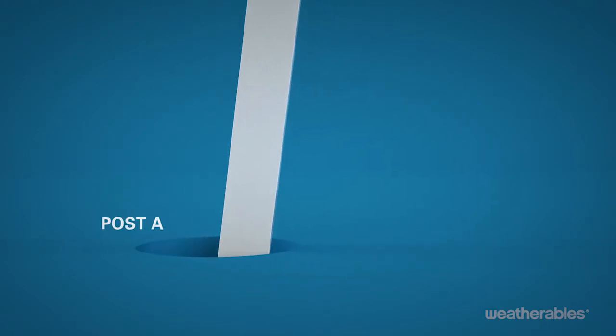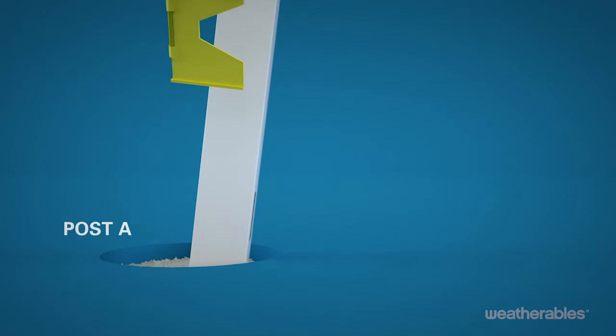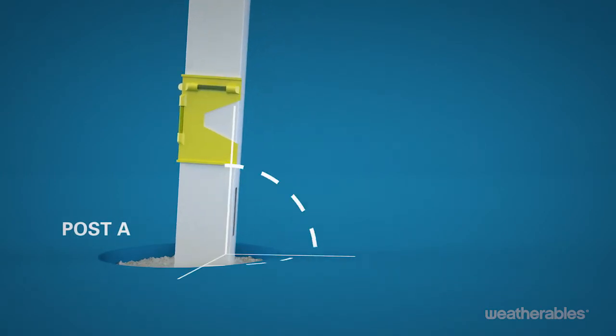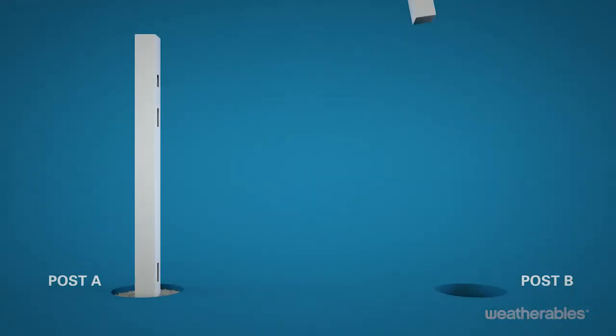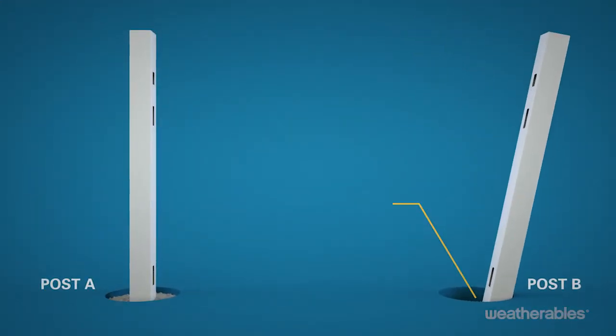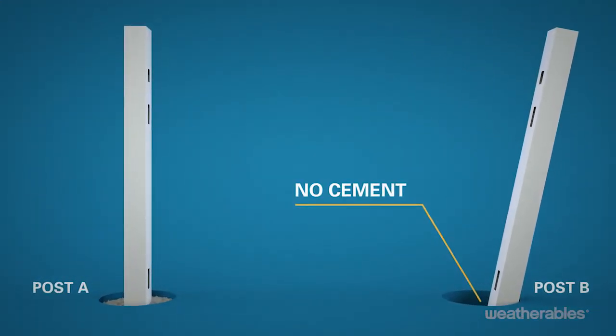Now you can start by installing post A in the first hole with concrete around the post. Be sure to level and plumb the post for proper placement. It's important to have post B sitting in the adjacent hole but not cemented so you can adjust alignment.